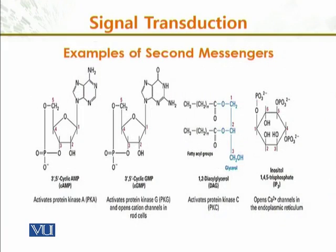For example, the second messengers, because they are ligands, are chemical in nature — like cyclic AMP, then cyclic GMP. They are activated, and further there are other molecules which accumulate and transduce the signals to the cell.